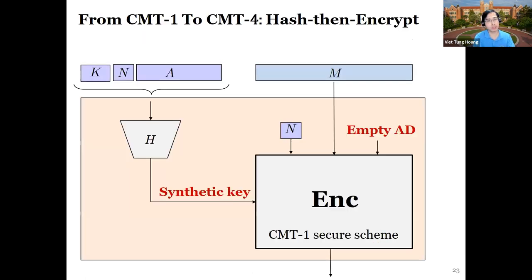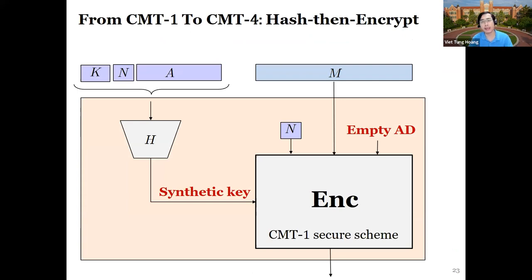There are two main notions: commit-four and commit-one. One wants to commit just the key; the other wants to commit everything. It turns out that once you can commit the key, it is easy to commit everything else, and we achieve that via a generic transform we call hash-then-encrypt. We have a base AE scheme that is commit-one secure, and we want to leverage it to obtain commit-four security. Commit-four means you need to commit K and AD; once you can do that, the message M is automatically committed.